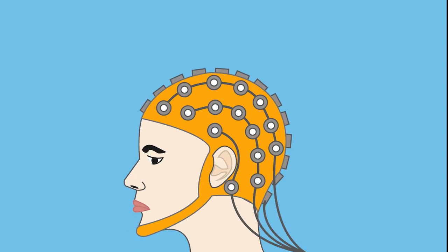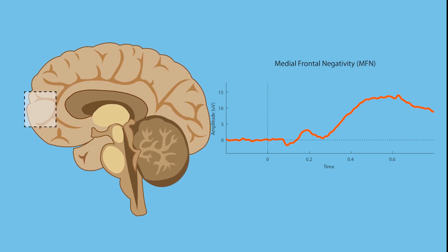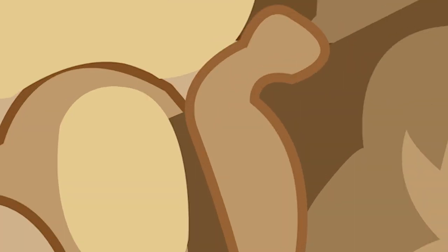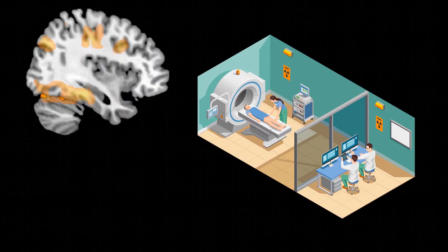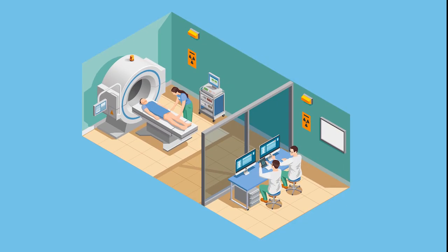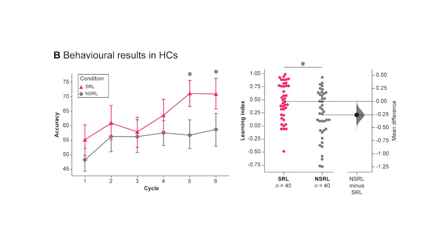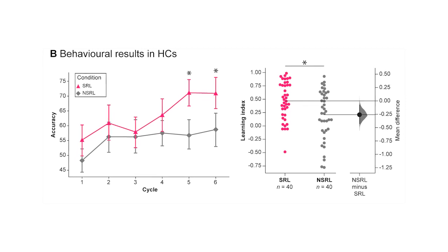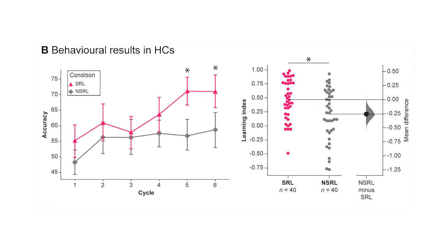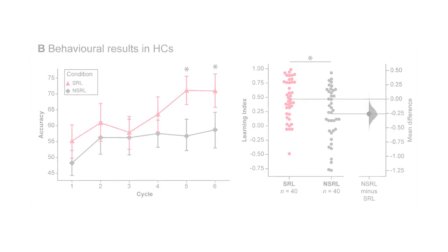During behavioral performance, we tracked ongoing electrophysiological signatures of feedback-based learning via the medial frontal negativity potential, a sensitive marker of cognitive demands and on-the-fly adjustments. Finally, we investigated gray matter volumetric correlates of socially reinforced learning through voxel-based morphometry.